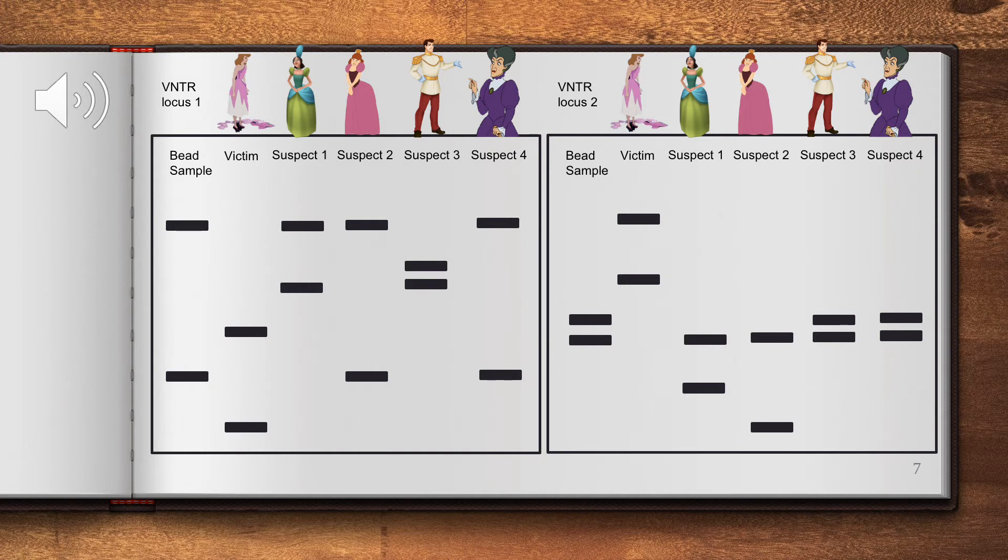The last suspect we investigate is Cinderella's evil stepmother. At both Locus 1 and Locus 2, both of her bands match the sample. The evil stepmother is declared guilty, and the fairy godmother punishes her by not allowing her to go to the ball.